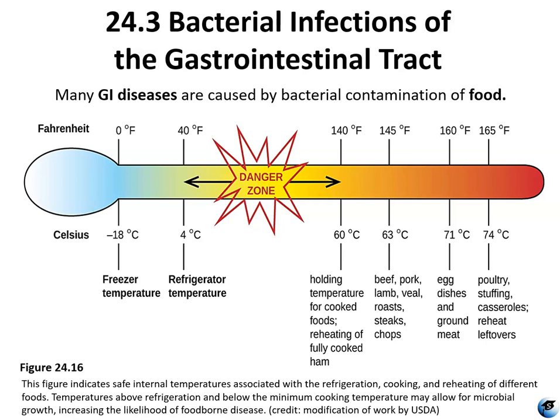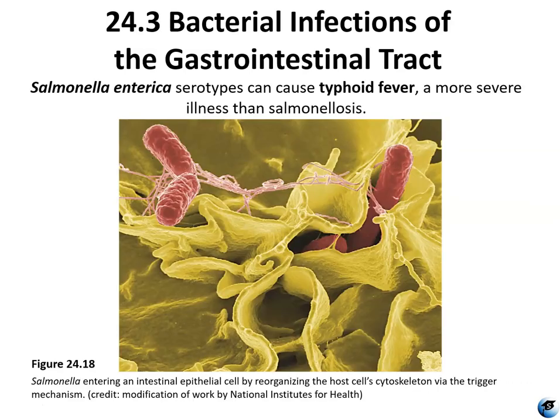Salmonella enterica — certain strains or serotypes — can be the causative agent of typhoid fever. Typhoid is much more severe than regular Salmonella food poisoning. Figure 24.18 shows Salmonella infecting intestinal epithelial cells. In typhoid fever, it actually changes the host cell's cytoskeleton, inducing the host cell to have replication of cells that are physically deformed, and it can even lead to a situation where the host's immune system starts to attack its own cells.